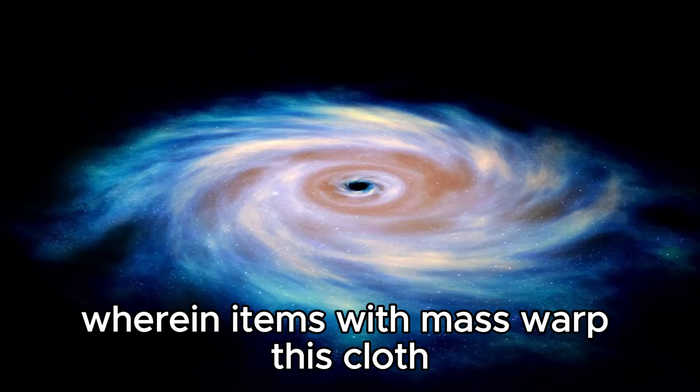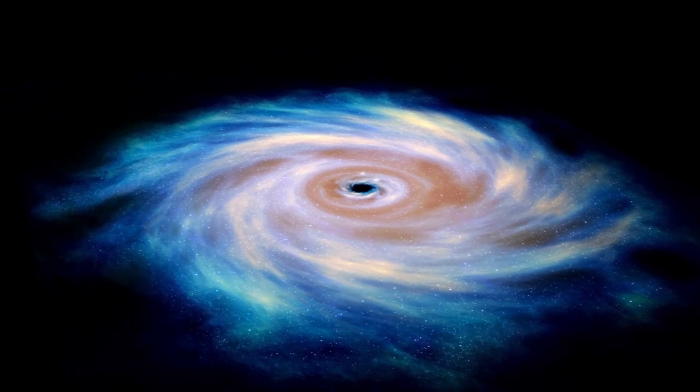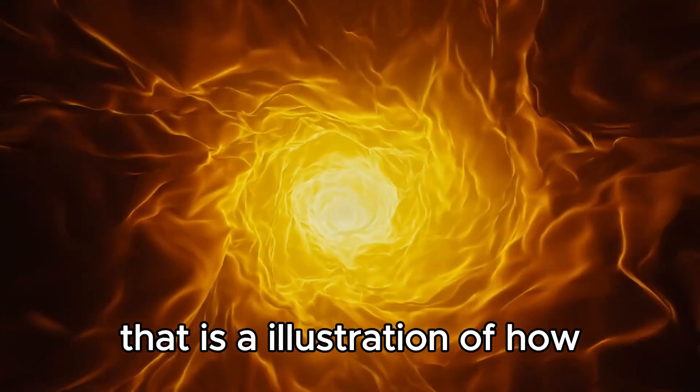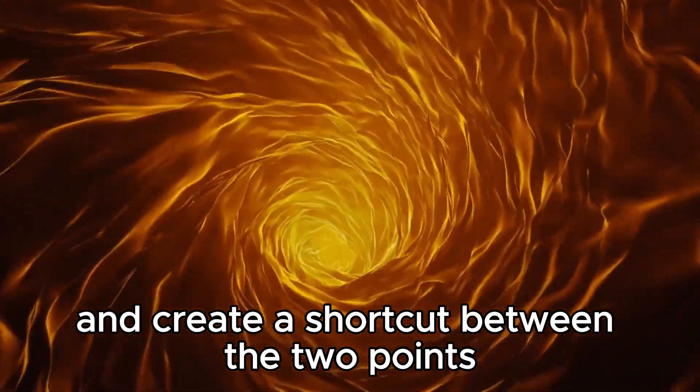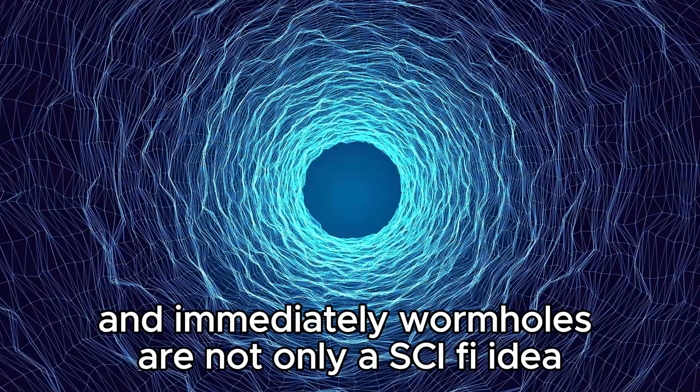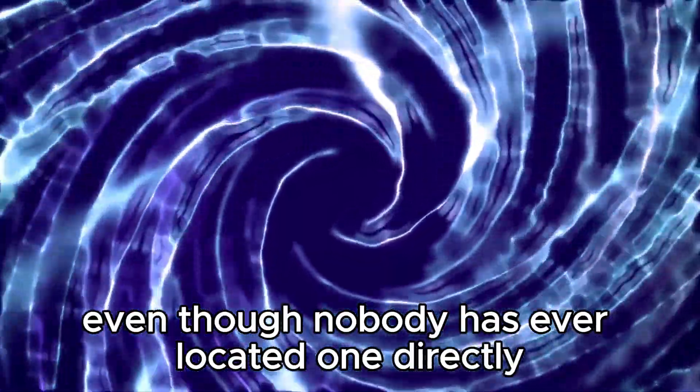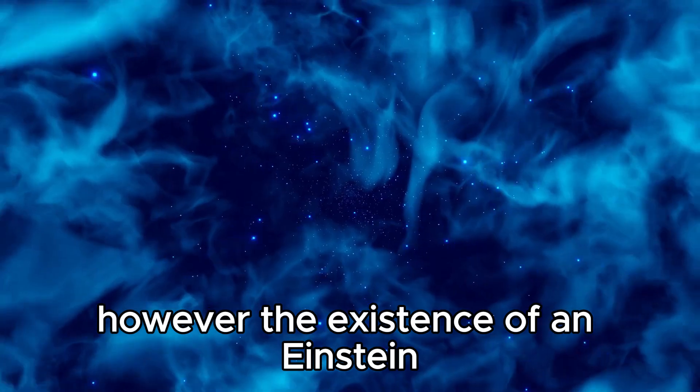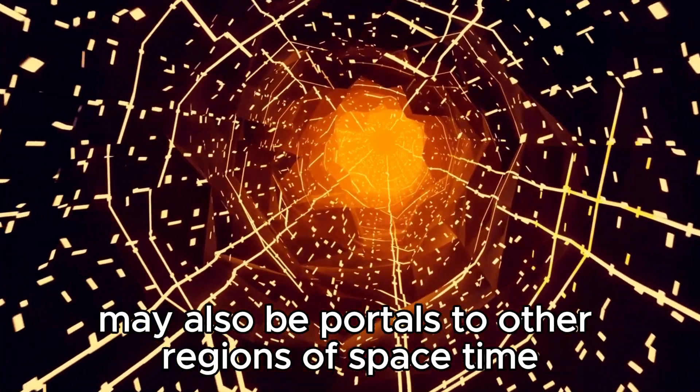Spacetime is the fabric of the universe wherein objects with mass warp this fabric, creating a gravitational field that causes other objects to move towards them. Now imagine a sheet of paper representing spacetime. If you pick two points on the paper and draw a line between them, that is an illustration of how objects move through spacetime. However, what if you could fold the paper in half and create a shortcut between the two points? That is the fundamental concept behind a wormhole, a shortcut through spacetime that connects two distant points immediately. Wormholes are not only a sci-fi concept, they're actually a prediction of general relativity. Although nobody has ever located one directly, the problem is that wormholes are inherently unstable and might collapse almost immediately. However, the existence of an Einstein-Rosen bridge would imply that black holes aren't just cosmic vacuum cleaners, but may also be portals to other regions of spacetime.